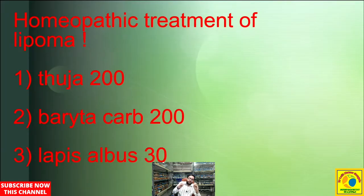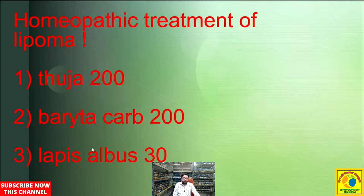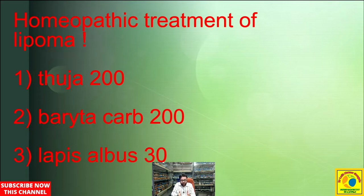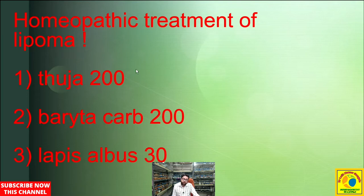Let's get to the treatment for lipoma. In my experience, the three top homeopathic medicines for lipoma treatment are Thuja 200, Baryta Carb 200, and Lapis Albus 200. A person suffering from lipomas can take these medicines, but the treatment should be prolonged. Lipomas are the result of very long-continued diseased lipid metabolism — they did not come into existence overnight. A patient of lipoma should be prepared to take these medicines for a very long period of time; in my opinion, a minimum of some months is necessary to get rid of them.